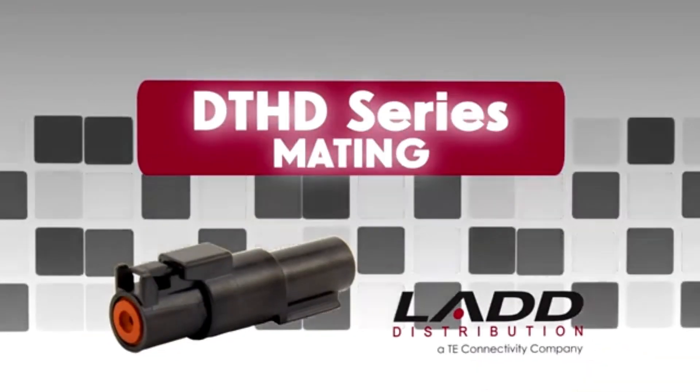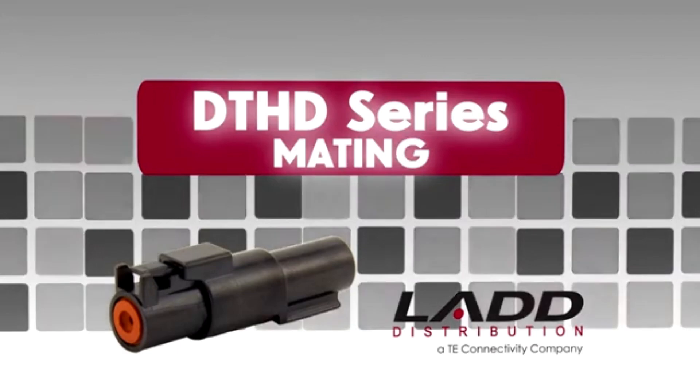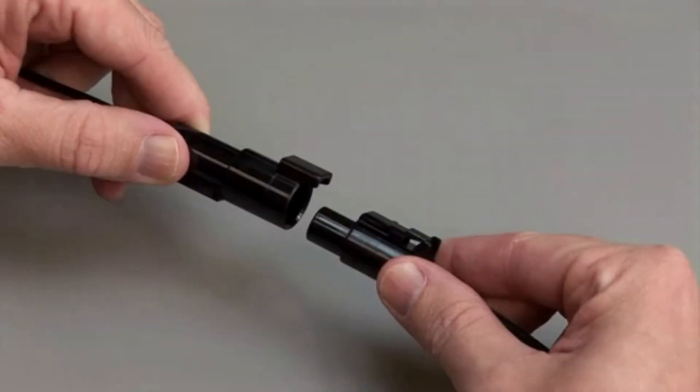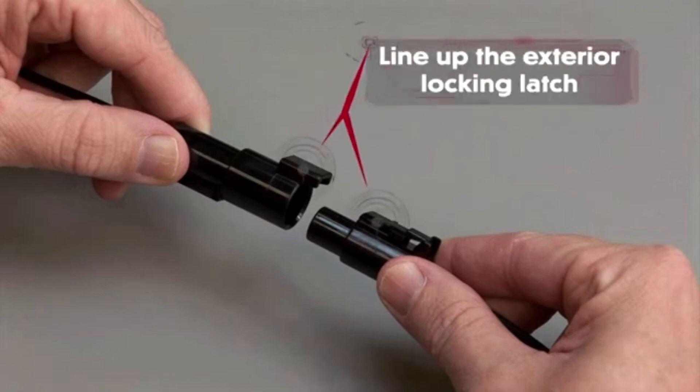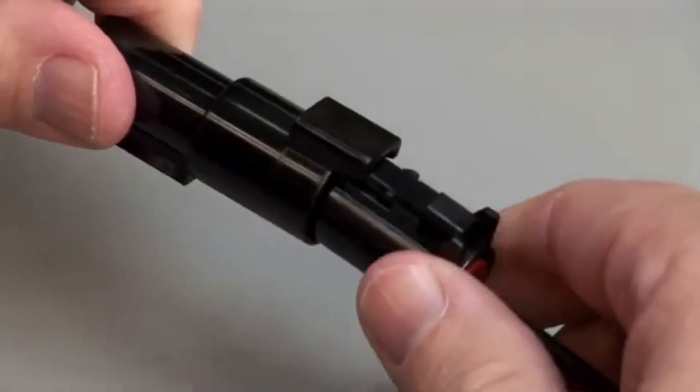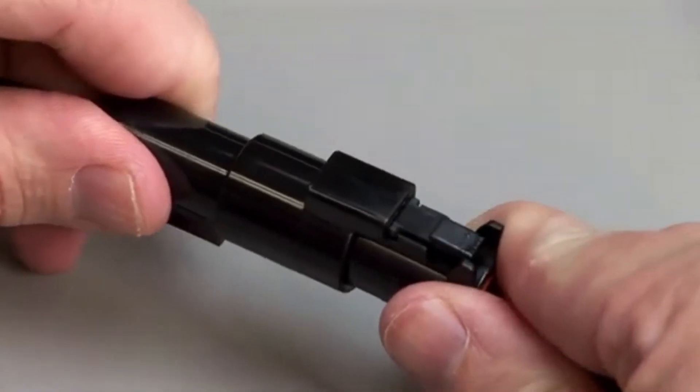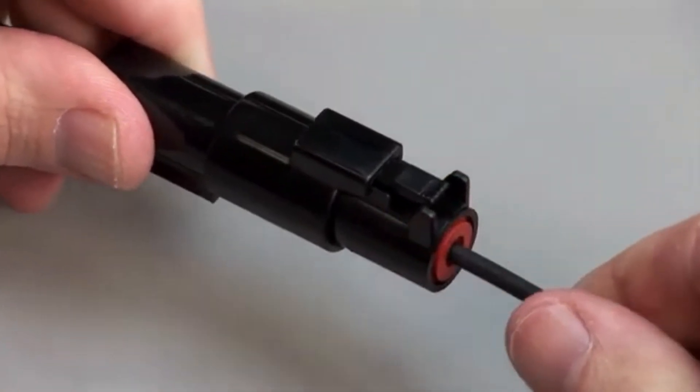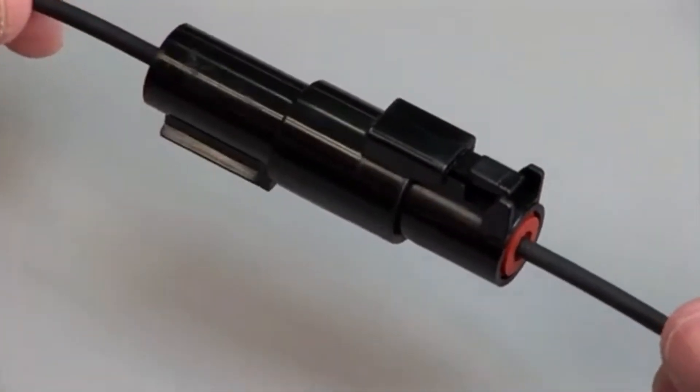DTHD Mating. All DTHD connectors are designed to be mated and unmated by hand. When mating a DTHD Series, grasp the connector by the connector body and line up the exterior locking latch. Push the plug and receptacle together until you hear a click and the exterior locking latch is seated in place.